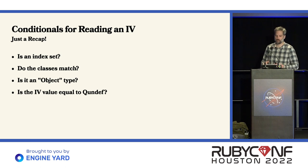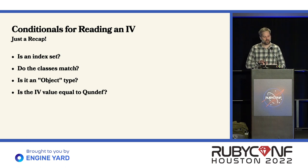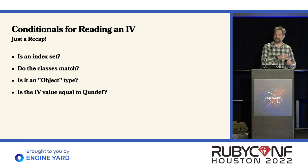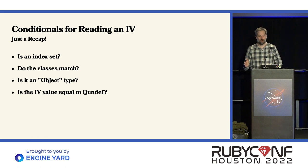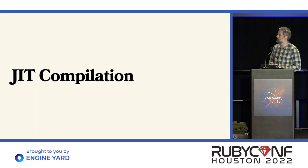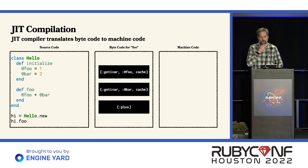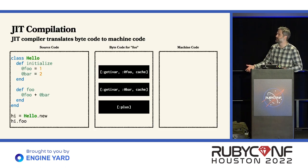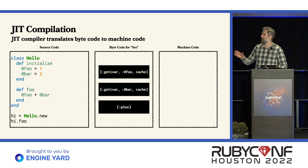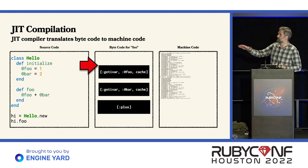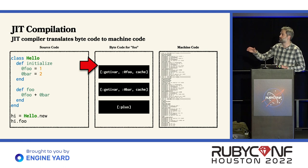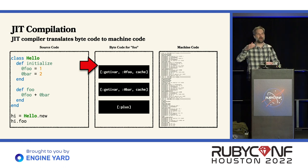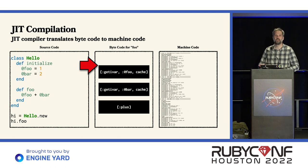To recap, the conditionals for reading an instance variable are: is the index set in the cache? Do the classes match in the cache? Is it a type object? Is the IV value equal to Q_UNDEF? To drive home how complicated this actually is, let's look at JIT compilation. The way the JIT works from a high level is that when we've executed a method enough times, the JIT will pause, iterate over each of the instructions from the virtual machine, and generate corresponding machine code for each of those instructions. Then rather than letting the virtual machine execute the instructions, it jumps into the machine code and executes that instead.